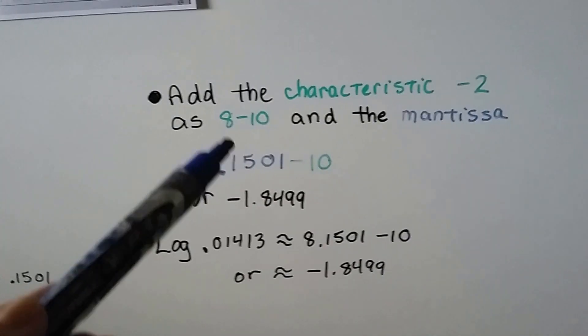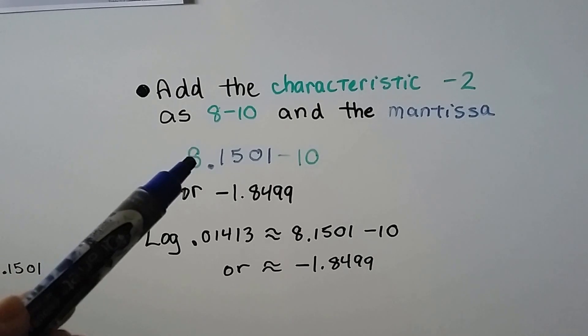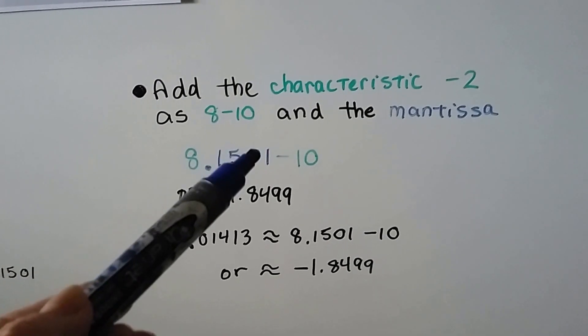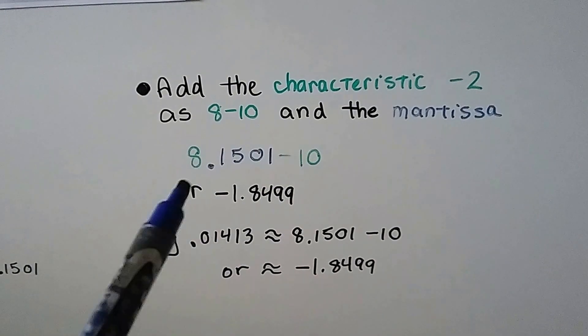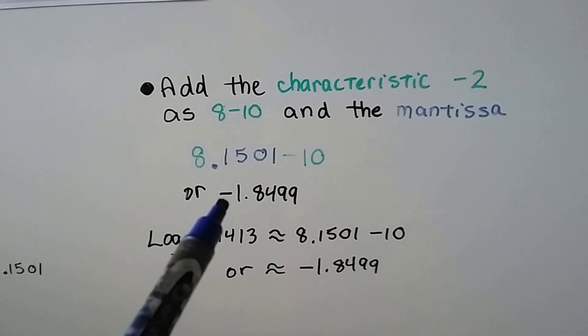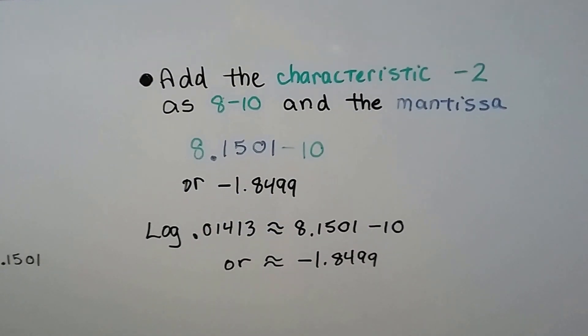Now we add that characteristic, that negative 2, as in 8 minus 10, and we get 8.1501 minus 10. Or, if we do the math, it's negative 1.8499.